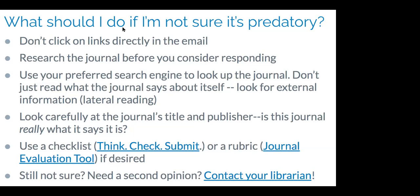Start by using your preferred search engine to look up the journal. Don't just read what the journal says about itself — look for what others are saying about it as well. This is called lateral reading, where you're not just reading what the institution says about themselves but looking for other opinions. What I often do is search for the journal title and the word 'predatory.' Also look carefully at the journal's title and publisher. You might want to use those checklists — Think, Check, Submit or the Journal Evaluation Tool. And if you're still not sure, contact your librarian for a second opinion.